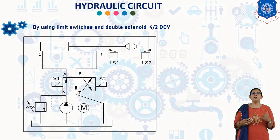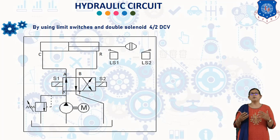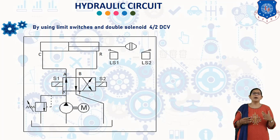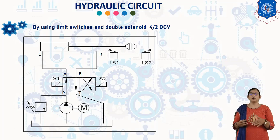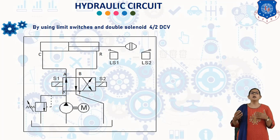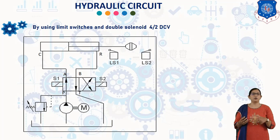In the second position of the 4/2 direct control valve, oil under pressure flows from P to B and A to T. Hence, the cylinder retracts. By the end of retraction, the cam presses the limit switch Ls1. The electric current flows to solenoid S1, and the spool of the 4/2 direct control valve shifts back to the first position. The cycle is then continued.